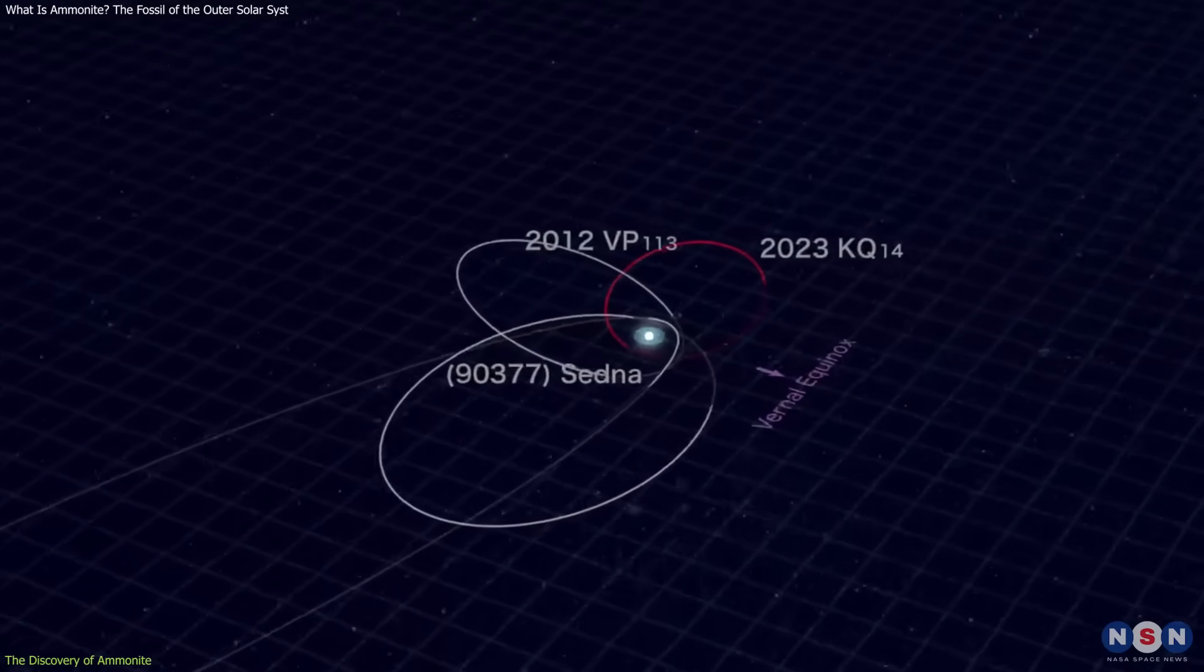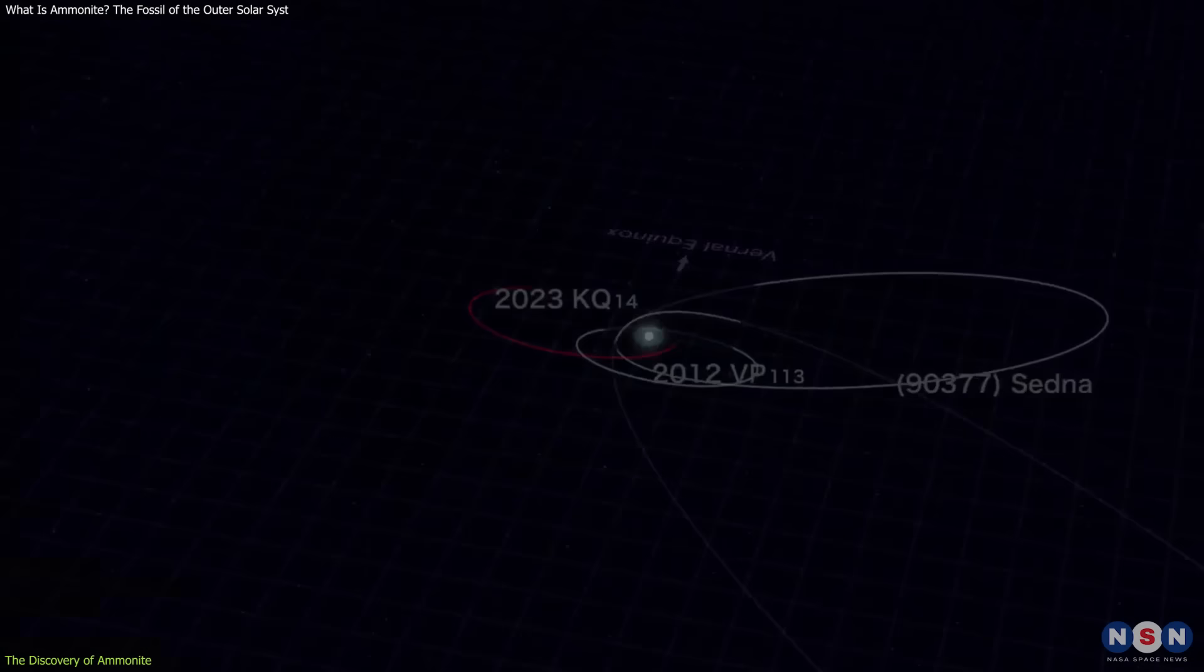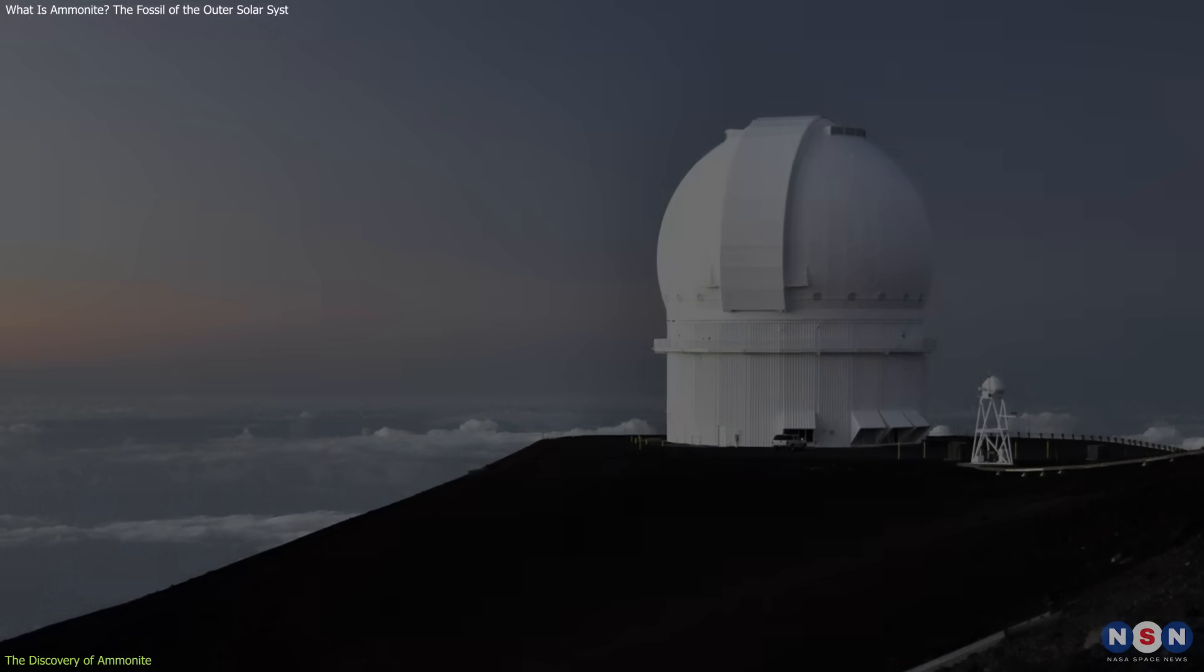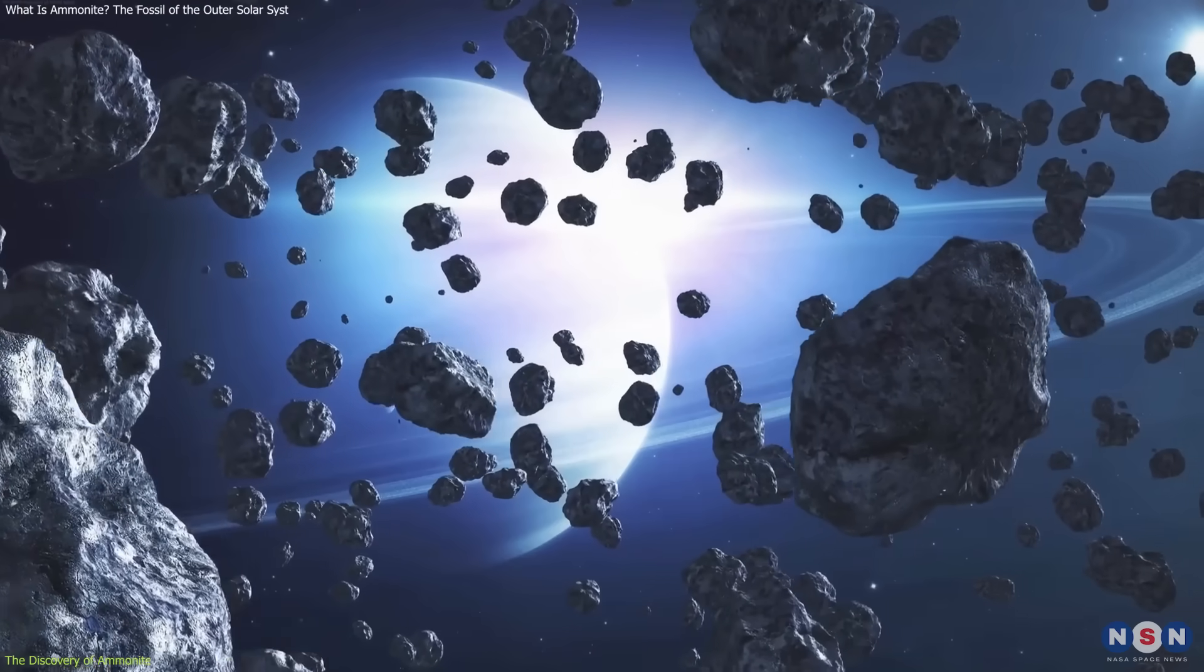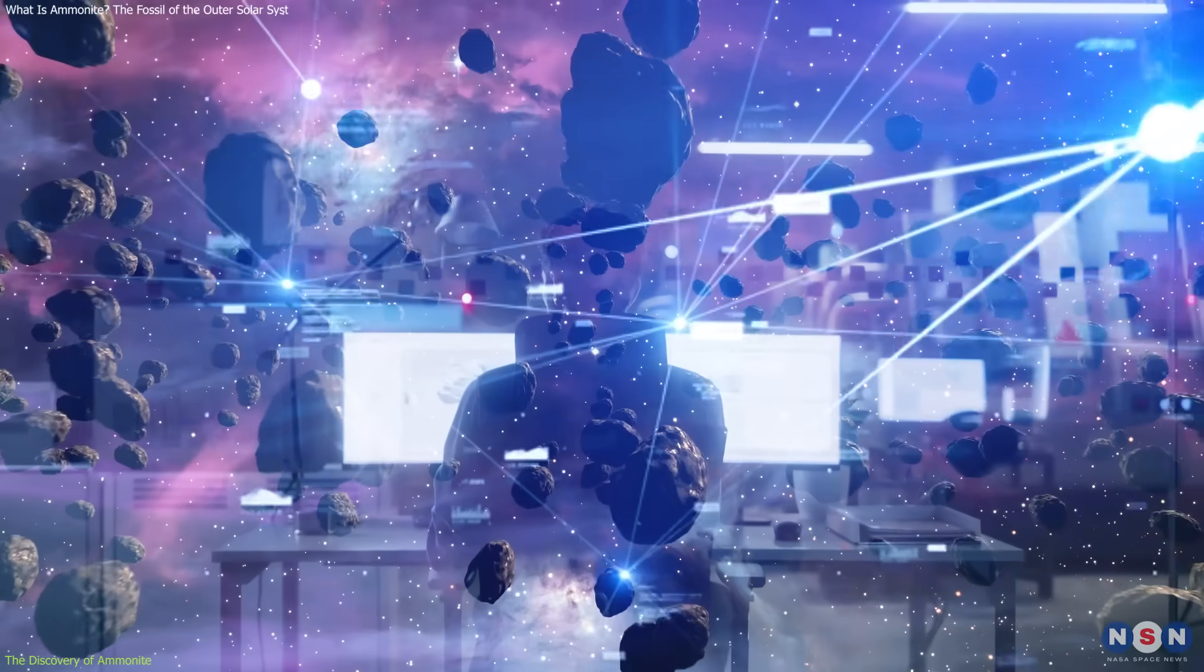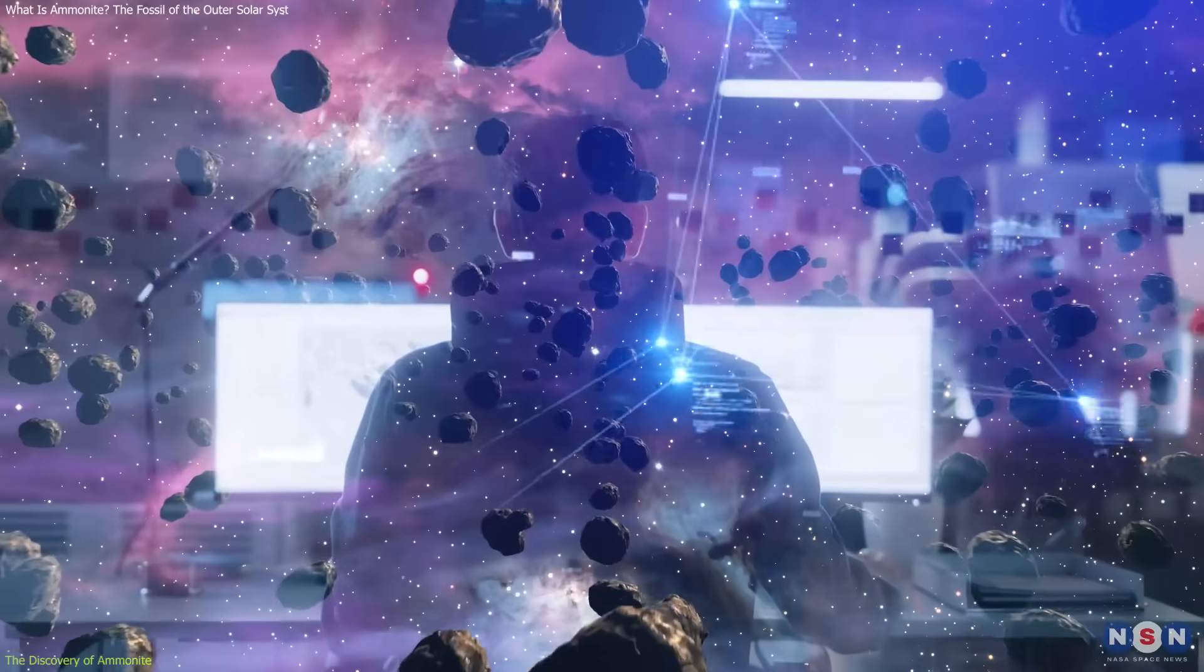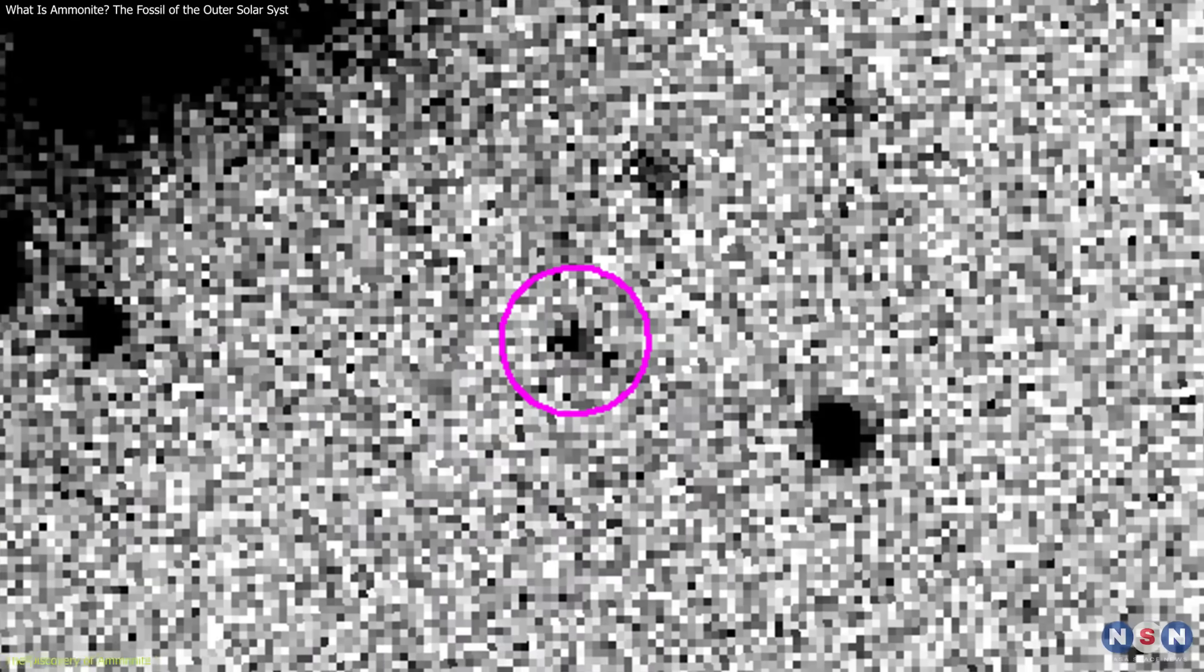Initial data hinted at an extraordinary orbit. Follow-up observations by the Canada-France-Hawaii telescope in 2024 confirmed it wasn't a typical trans-Neptunian object. Researchers dug into archival images going back nearly two decades, and there it was, quietly tracing its arc through space since at least 2005.